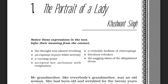As you can see on the screen, there are expressions noted: infer their meaning from the text only. There are a few expressions for understanding that appear within the lesson, such as: 'the thought was almost revolting,' 'an expanse of pure white serenity,' 'a turning point,' 'accepted her seclusion with resignation,' 'a veritable bedlam of chirping,' 'frivolous rebukes,' and 'the sagging skin of a dilapidated drum.' Such expressions are used to make the lines beautiful and the lesson more interesting for readers.